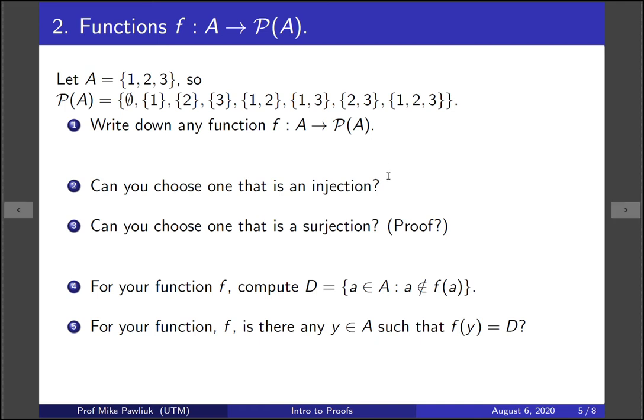Okay, welcome back. So for this one I'm going to write down my favorite function, and you will have your own. But to follow along, here's my function: f of 1 is the set {1, 2}, so for every element of A, for every 1, 2, and 3, I need to associate it to one of these eight things. So 1 got sent to {1, 2}, 2 got sent to {1, 3}, and 3 got sent to the empty set. So that's my function. It's a little bit weird because its domain are numbers and its output is sets, but it's allowed.